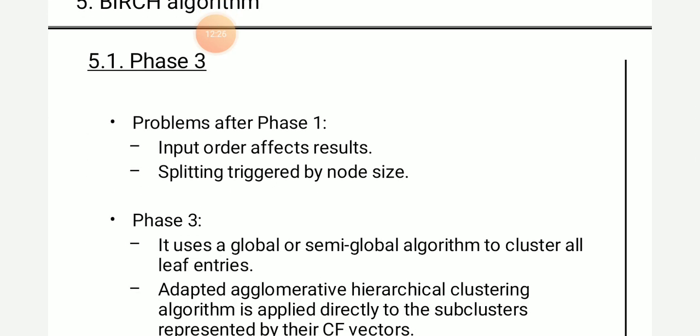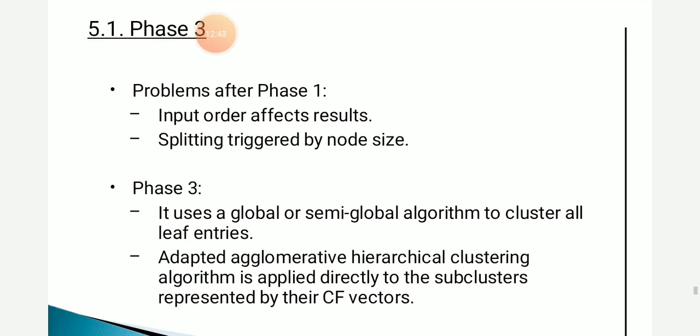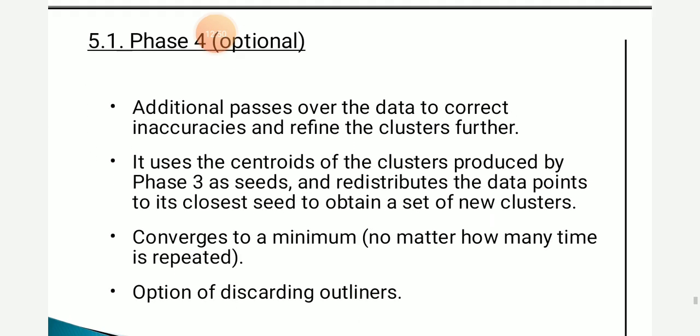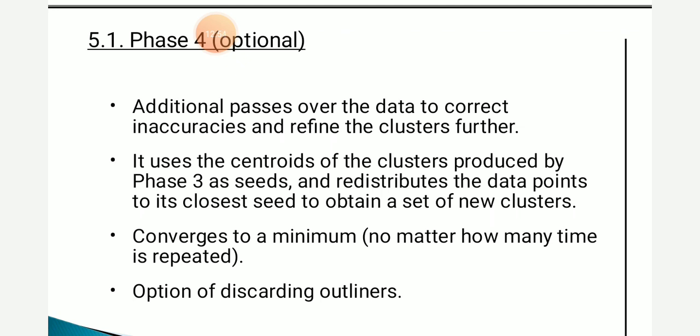In phase 3, two important problems arise after phase 1: the input order affects results, and splitting is triggered by node size. In phase 3, we use a global or semi-global algorithm to cluster all the leaf entries, such as agglomerative hierarchical clustering on the subclusters represented by their CF vectors. Phase 4 is optional — additional passes over the data correct inaccuracies and refine clusters further. It uses the centroids of clusters produced by phase 3 as seeds, redistributes data points to the closest seed to obtain a new set of clusters, converges to a minimum value, and optionally discards outliers.